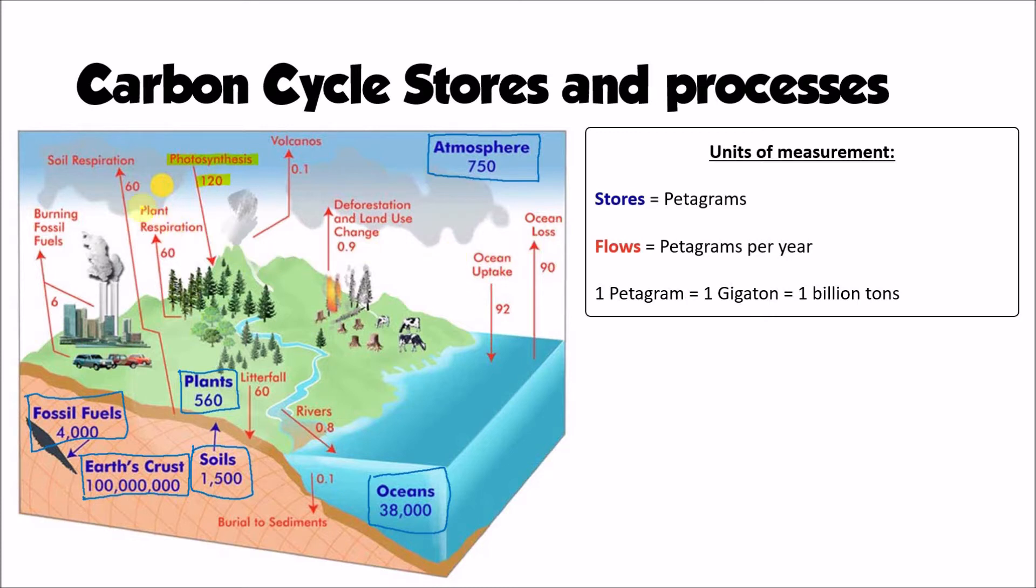Another important process is that of respiration, and respiration can take place within any living organisms. So within plants, within microorganisms, within the soil, and even within animals as well. So any living creature, any living organism undergoes respiration. And this is where an organism will use carbohydrates, maybe produced during photosynthesis, to carry out their life functions. And it's going to take oxygen from the atmosphere that's going to be combined with the carbohydrates, and it's going to use that to release that stored energy.